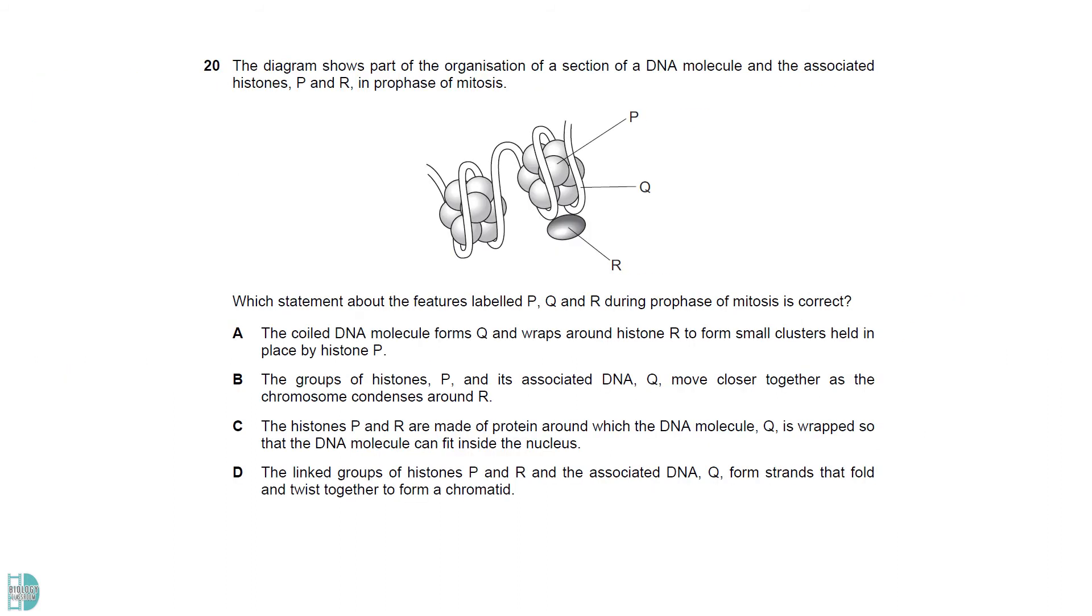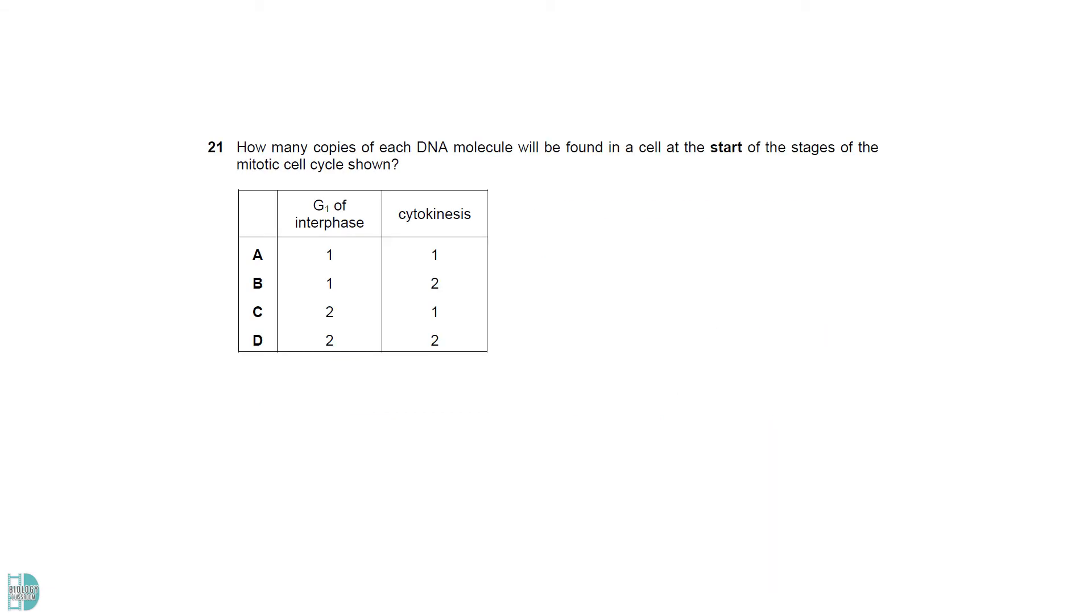P and R are the different types of histone proteins and Q is the DNA molecule. DNA associates with the proteins and forms a nucleosome. During mitosis DNA folds and twists together to form a more condensed structure. DNA replication occurs in the S phase so cells in G1 would have only one copy of each DNA molecule. During cytokinesis the daughter cells have not fully separated so the DNA molecules for both are still in the same cell.